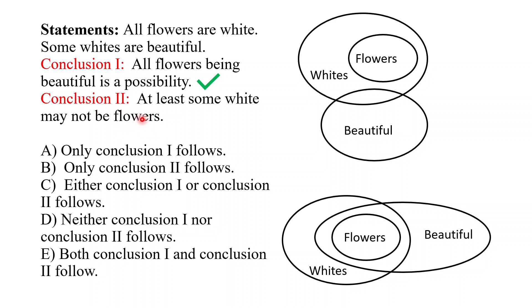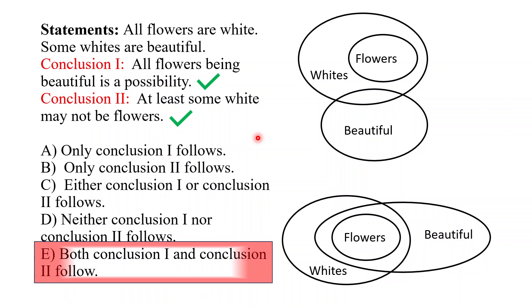Conclusion 2 says: At least some white may not be flowers. Ignoring 'at least,' read: some white may not be flowers. 'May not be' also points to possibility, so check the possible diagram. You can see the area of white that is not flower — yes, some white may not be flowers, so Conclusion 2 is also correct. Both conclusions are correct, so the answer is option E — both Conclusion 1 and Conclusion 2 follow. We got the correct answer again.